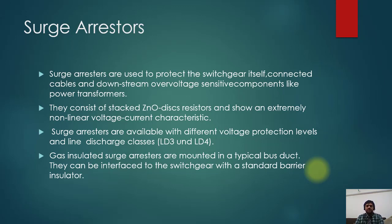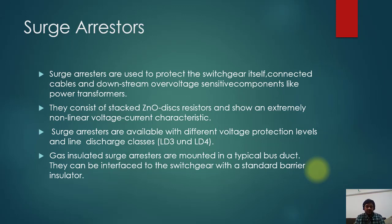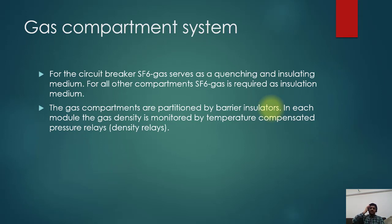Gas-insulated surge arrestors are mounted in a typical bus stack and can be interfaced to the switchgear with a standard barrier insulator. These surge arrestors are basically variable resistors — at rated voltage the resistance is extremely high, but when the voltage is two, three, or many times higher, their resistance becomes very low. By this principle, when surges come they are successfully grounded, protecting the equipment.